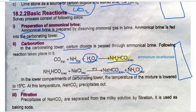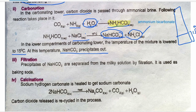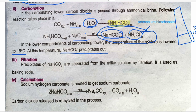In the lower compartments of the carbonating tower, the temperature of the mixture is lowered to 15°C. At this temperature, sodium bicarbonate, NaHCO₃, precipitates out and you are left with ammonium chloride in solution. The next step is filtration, where sodium bicarbonate is separated from the solution by filtering out the precipitate. This sodium bicarbonate can also be used as baking soda.